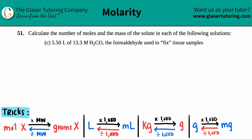Number 51: calculate the number of moles and the mass of the solute in each of the following solutions. We have letter C. In this case, we have to find the moles and the mass of 5.50 liters of 13.3 molarity of H₂CO — the formaldehyde used to fix tissue samples.